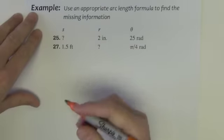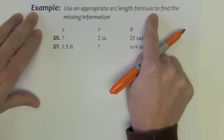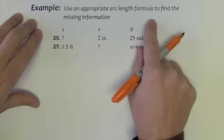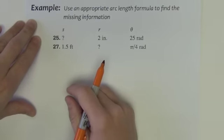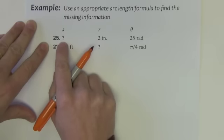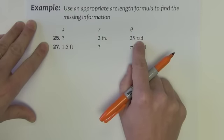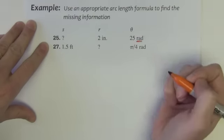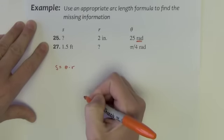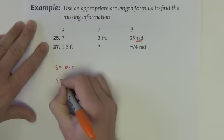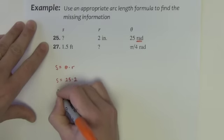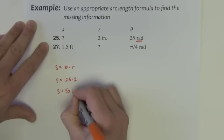Let's do some arc length examples. Use an appropriate arc length formula to find the missing information. Here we're trying to find the arc length; we're given the radius and the angle is 25 radians. Since the angle is in radians, we use S equals theta times R. The arc length is 25 times 2, which is 50 inches.